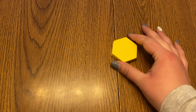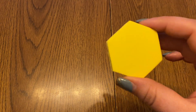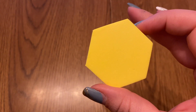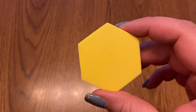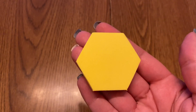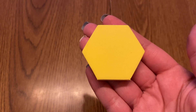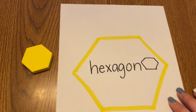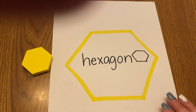We're gonna start with this shape. Take a minute just to look at it. What are some things that you notice about this shape? This shape is called a hexagon. Practice saying that word: hexagon.